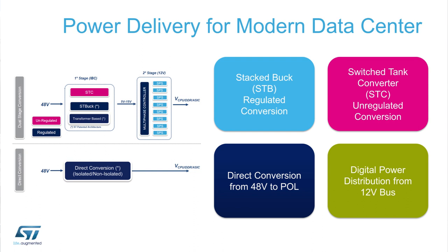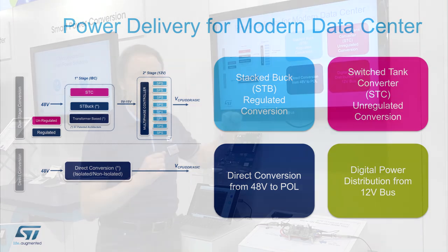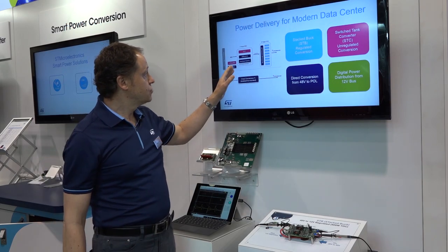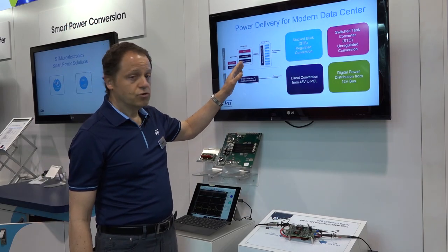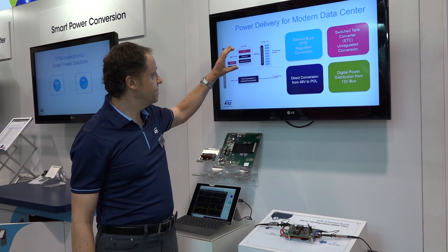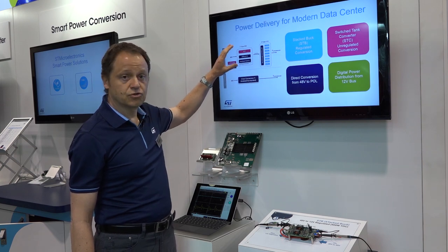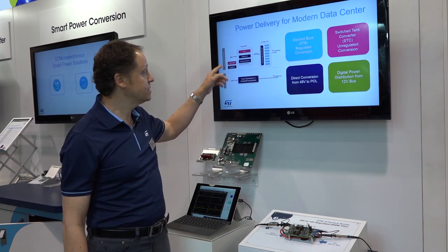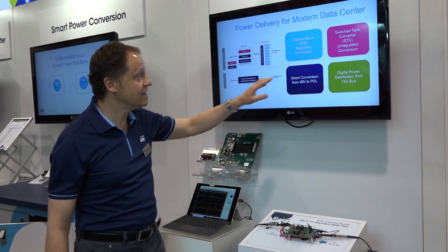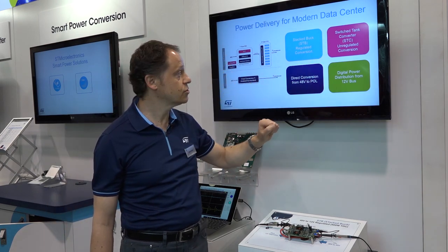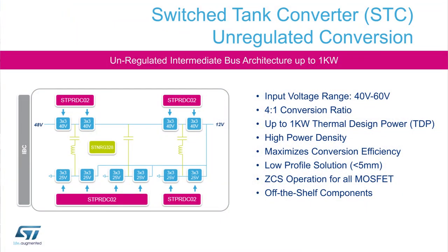The second class of products is a direct conversion from the 48 volt down to the point of load. For the two stage approaches we have different architectures: we have unregulated architectures that are based on STC switch tank converter, and this switch tank converter implements a fixed conversion ratio — the most popular is 4 to 1, so that we go from 48 to 12 volt.